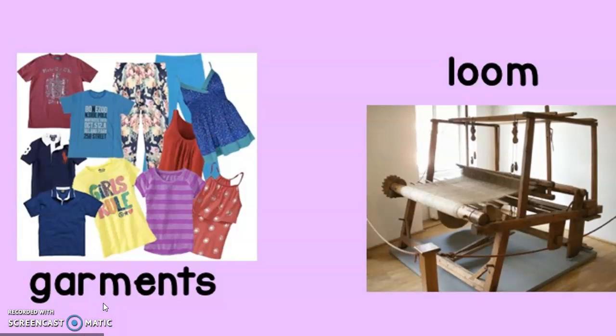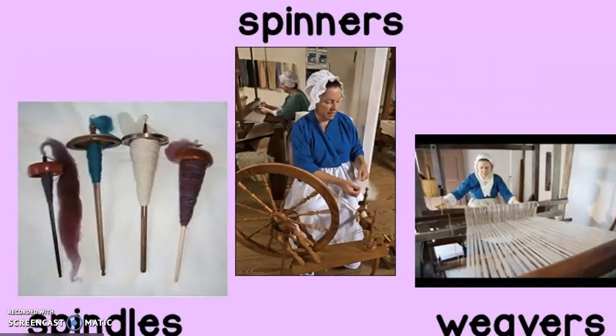Let's go over our vocabulary words. The first vocabulary word is garments — pieces or articles of clothing. The next vocabulary word is loom — a machine for weaving yarn or thread into cloth. Our next vocabulary word is spindles — small wooden tools used for spinning fibers into thread.